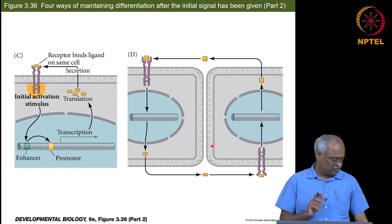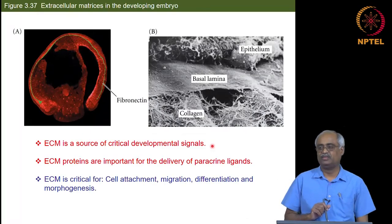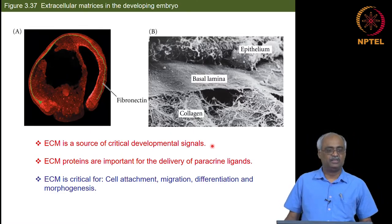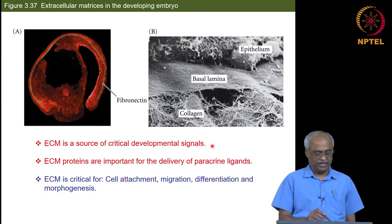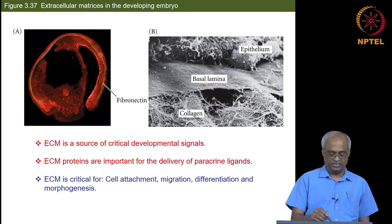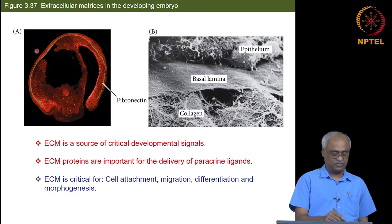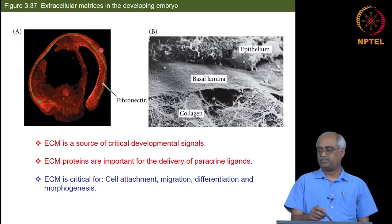Next we look at the ECM — the extracellular matrix. First, let us familiarize ourselves with what ECM is and its components, and then look at how it affects development. This is an embryo where fibronectin, a particular component of the ECM, is expressed, and it is absolutely important for continued embryonic development.